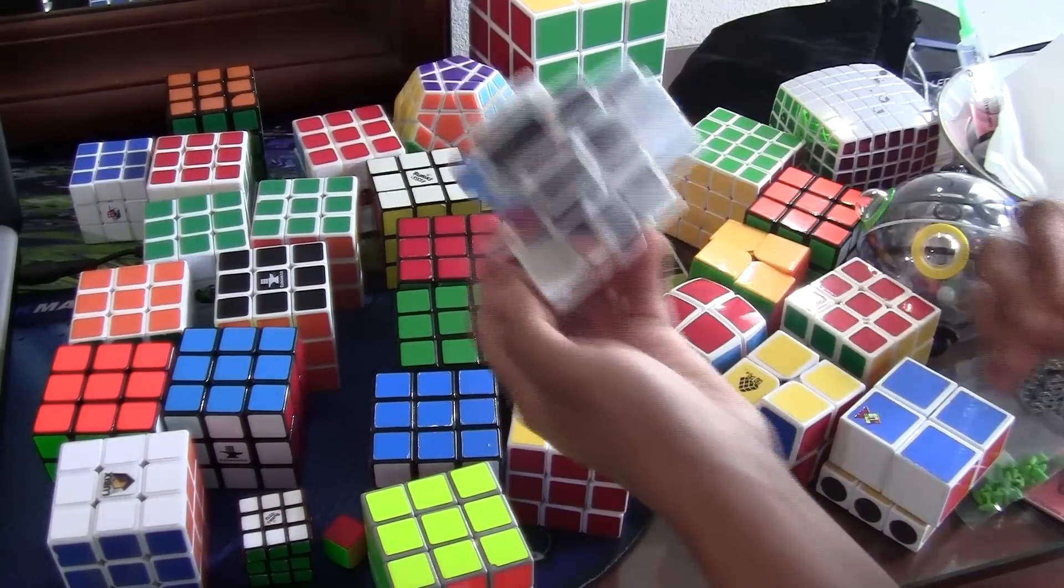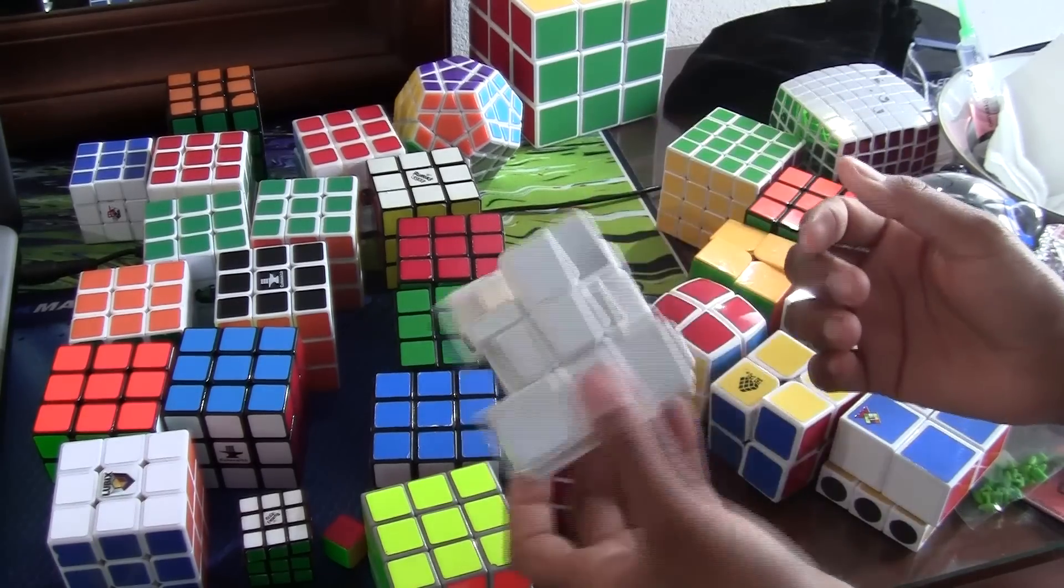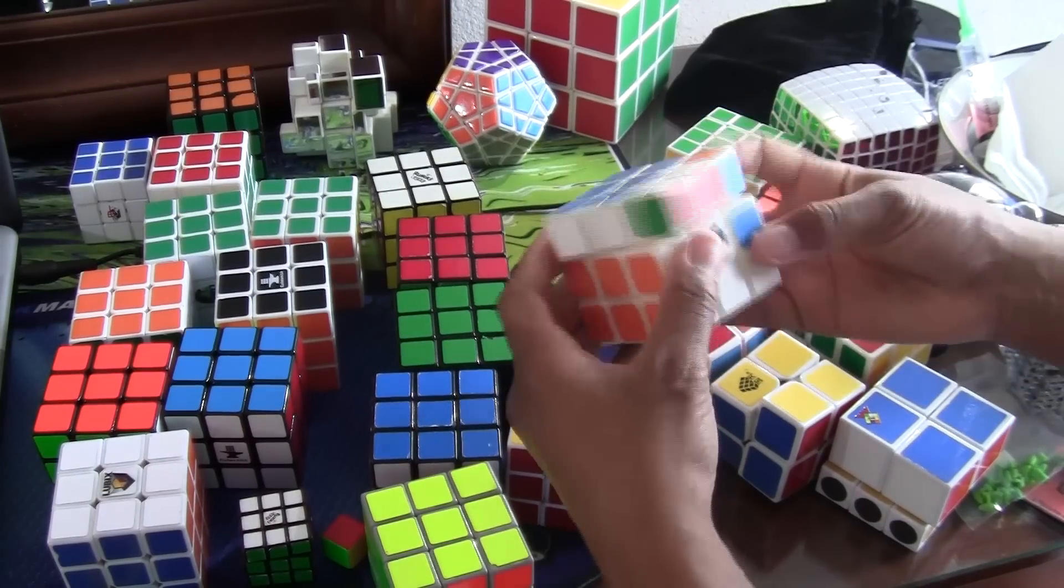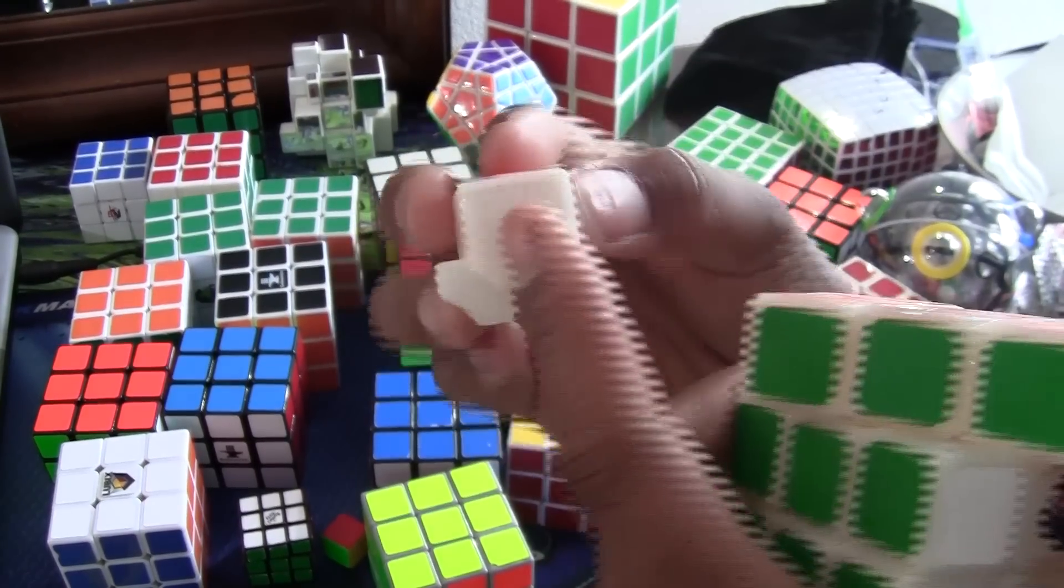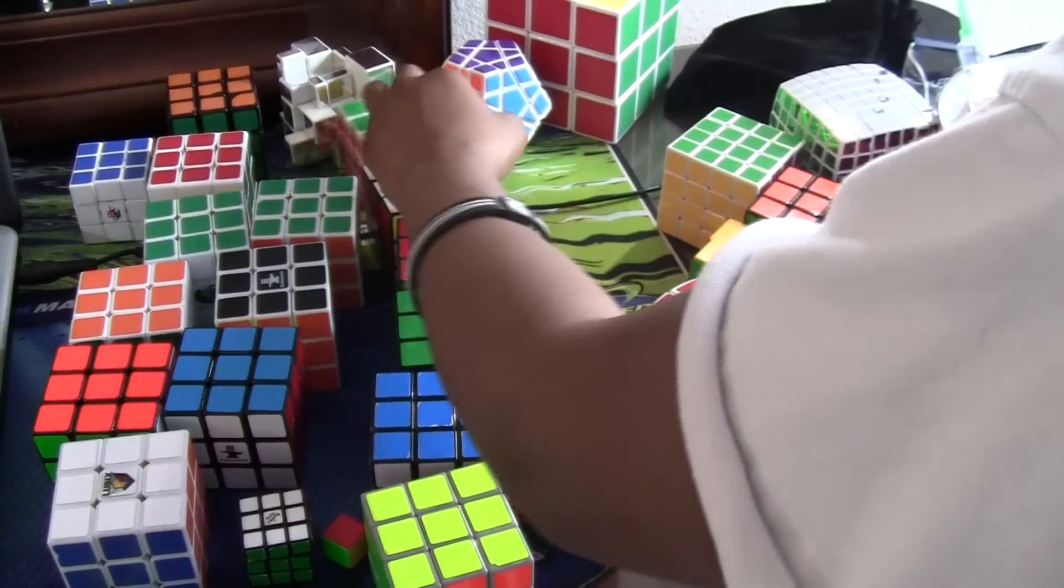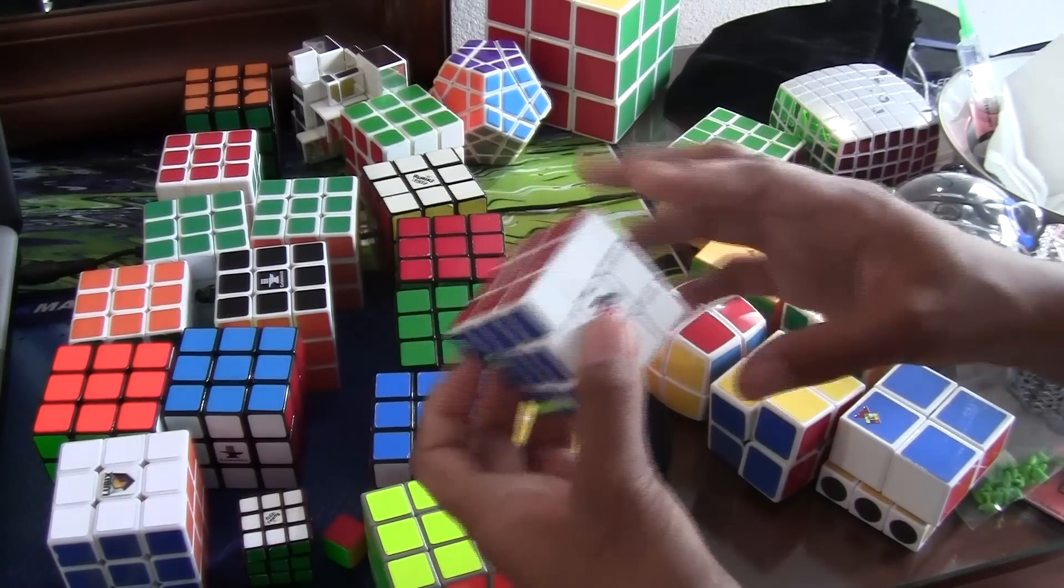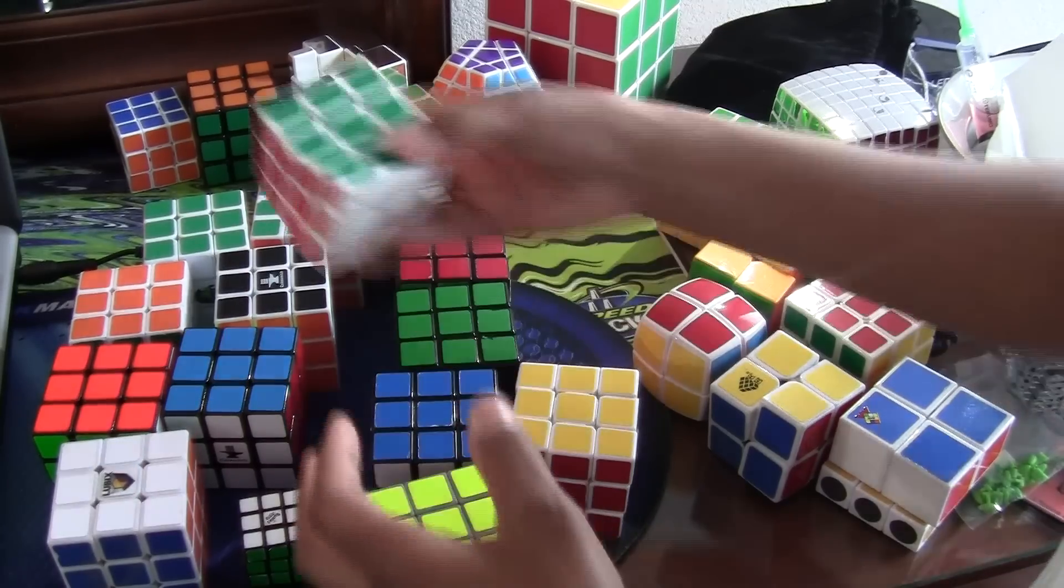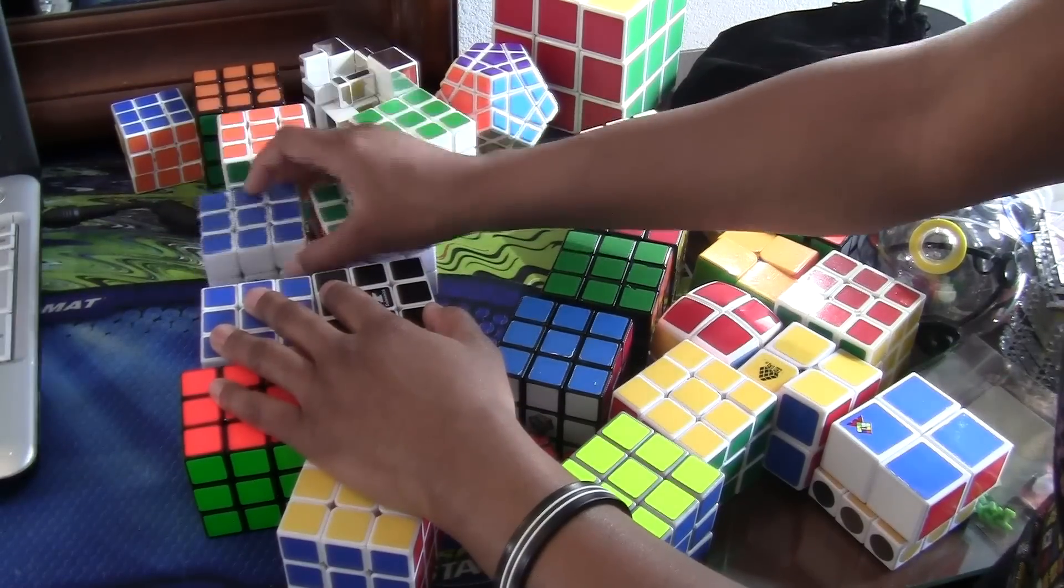This is an MF8 version 2, it seems like a version 2, MF8 megaminx. These are mirror blocks that I mixed up that I'm gonna try to solve, but I think I got the cross and now I gotta figure out the rest. This is a Ghost Hand version one or two, I could easily find out on YouTube but I didn't bother to look it up, but it's the one that has those rigid thingies. This is a Type F2. This is a micro alpha because I have a mini alpha and the mini is bigger. This is the Alpha CC.